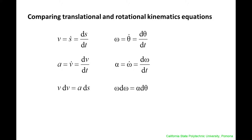It is interesting to note that the translational and rotational kinematic relationships are analogous to each other. The linear displacement s is analogous to the angular displacement theta. The linear speed v is analogous to the angular speed omega. And the linear acceleration a is analogous to the angular acceleration alpha.